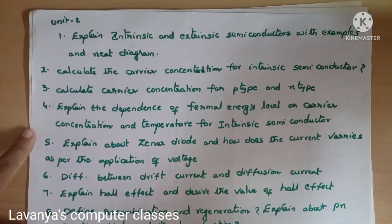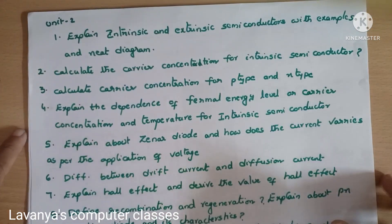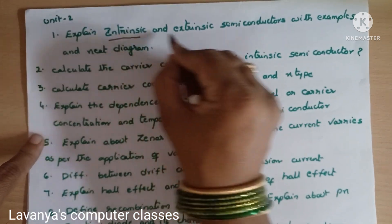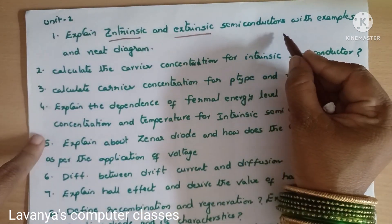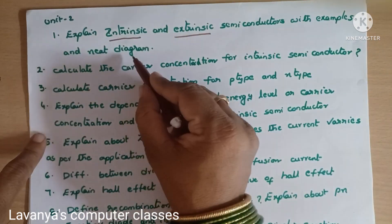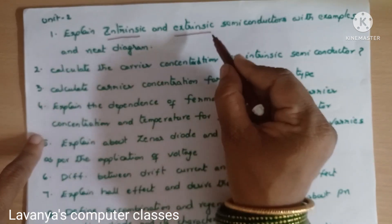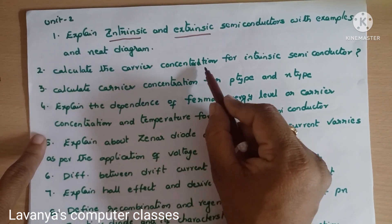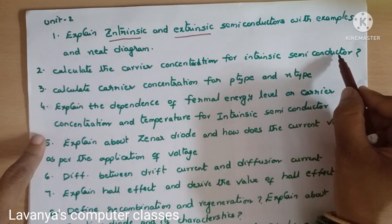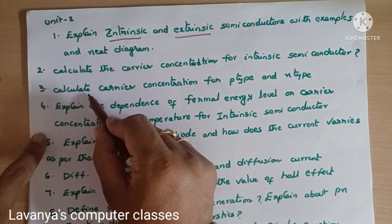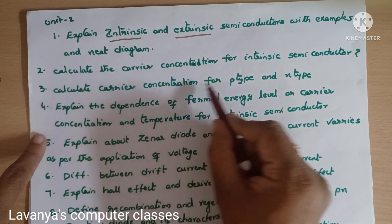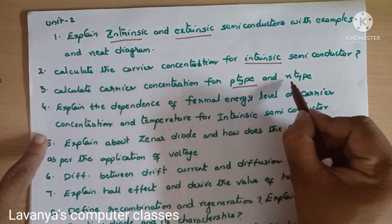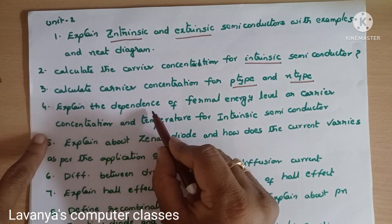Unit 2 questions: First, explain intrinsic and extrinsic semiconductors with examples and neat diagrams. Second, calculate the carrier concentration for an intrinsic semiconductor. Third, calculate carrier concentration for p-type and n-type semiconductors.